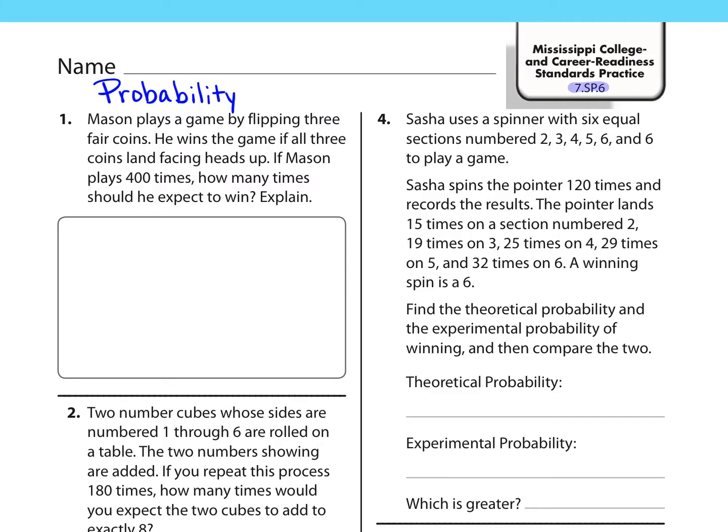Standard 7 SP6 is about probability. We have two types. We have theoretical, which means the probability of something happening in theory, what you would expect. And then we have experimental. This is the probability of what actually happens in an experiment, when you actually try to do an experiment and see what's going to happen. So we're going to look at problem number 4.